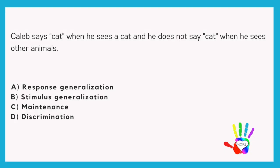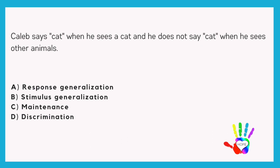Caleb says 'cat' when he sees a cat and does not say 'cat' when he sees other animals — this is discrimination. He's discriminating when to say 'cat' and when not to. Beverly learned to complete a puzzle, and two months later her behavior technician took the puzzle out and asked her to complete it, and Beverly was able to. What did Beverly demonstrate? This is maintenance — something was taught, time passed, and the person can still do it. That is maintenance.